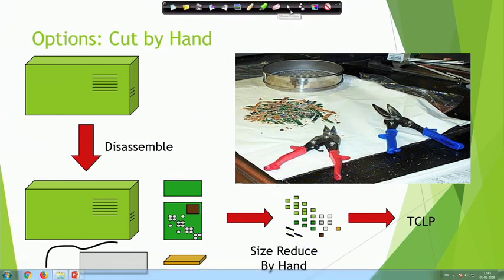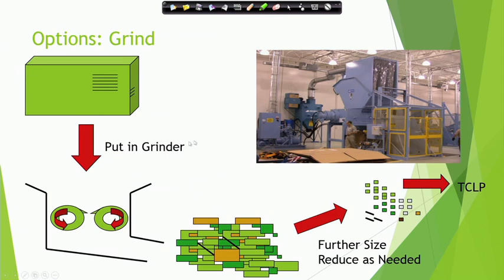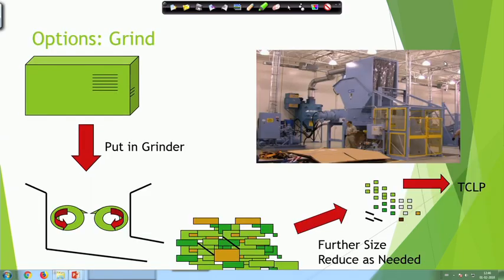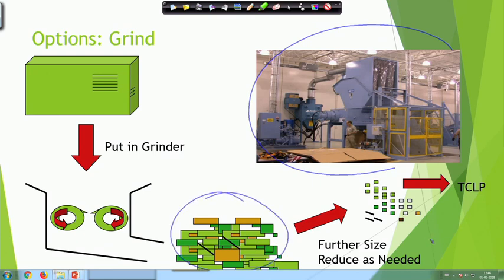Another way of doing it is you can grind it: take your e-waste to a grinder, grind it for some size reduction, then do further size reduction by hand as shown previously, and get your sample to work with in the different leaching tests.